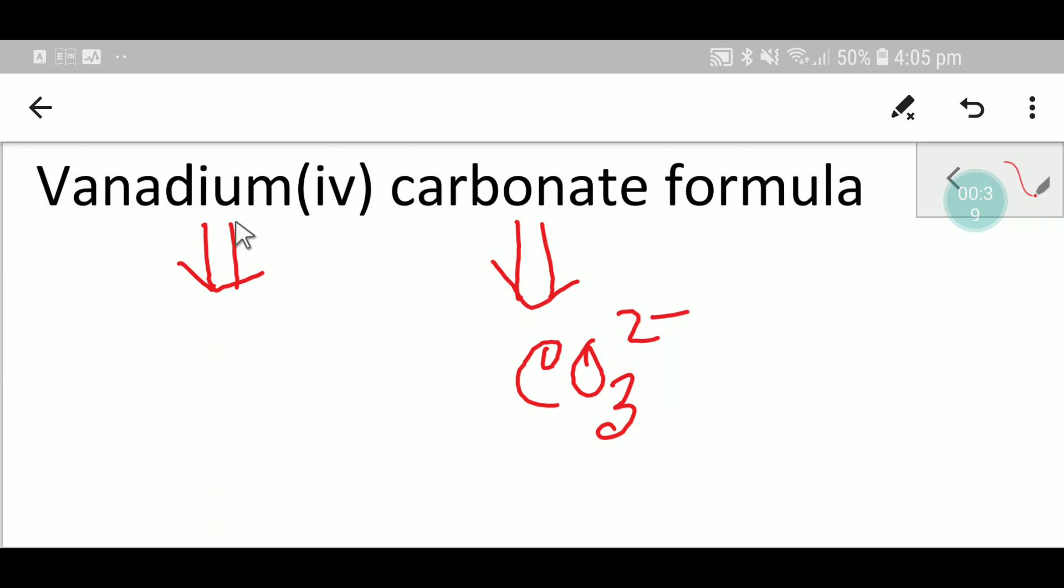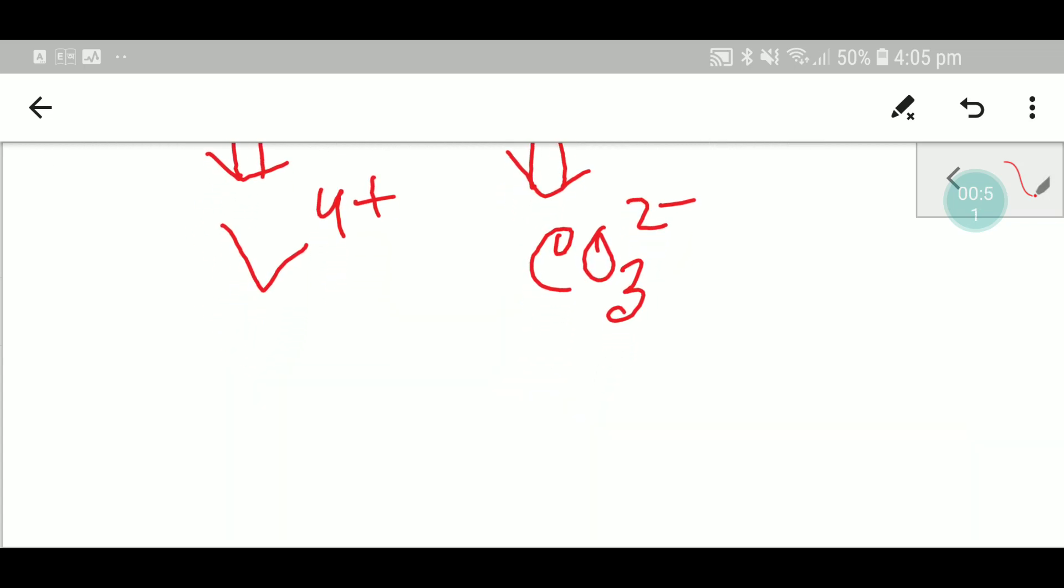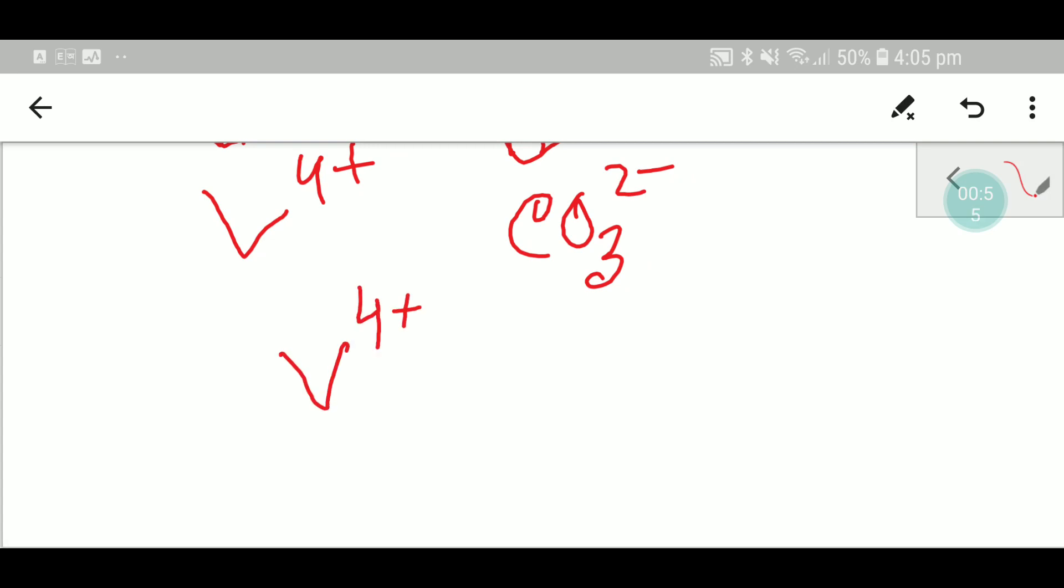You know that the symbol for vanadium is V. And here is the oxidation state of vanadium, 4+. So you have to write these two side by side to write the formula for vanadium carbonate.